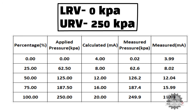At the end, apply 250 kPa pressure to the transmitter and note down the measured pressure value from the transmitter display. The measured pressure value should be nearest to 250 kPa. The measured milliampere value should be nearest to 20 milliampere. The five-point verification is done.